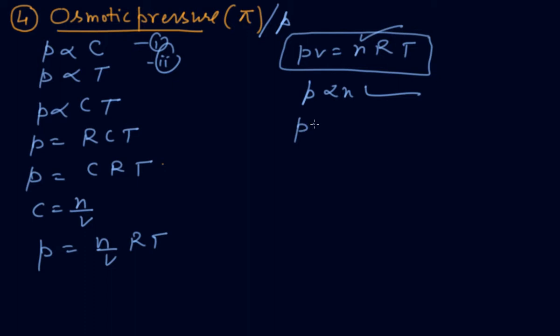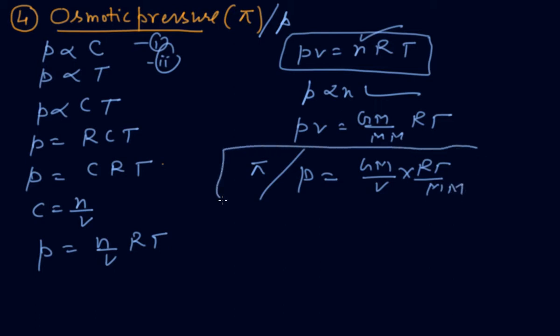Also, pV = nRT = (m/M)RT, where m is given mass and M is molar mass. Then p or π = (m/V)RT/M. You must take care of this formula.